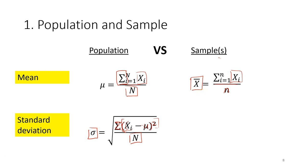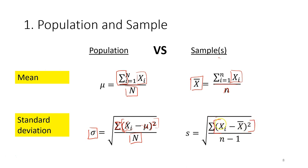However, for the sample, the way we calculate standard deviation is slightly different. We still calculate the sum of squares — squaring the difference of each observation from the mean and summing all values — but the difference is that we divide by n minus 1 instead of n. This is what we call the degree of freedom. Make sure you pay attention to the formula and use the correct standard deviation.